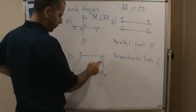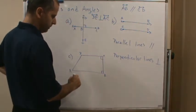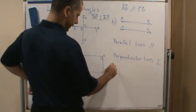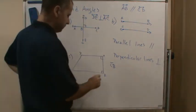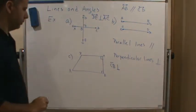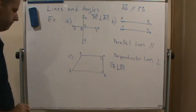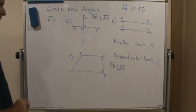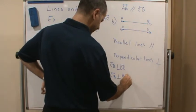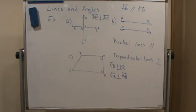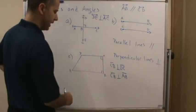Looking at this figure, we're working with line segments from vertex to vertex. We would say segment CV is perpendicular to segment DC. Also, segment CB is perpendicular to segment AB because they form a right angle when they intersect.